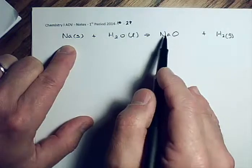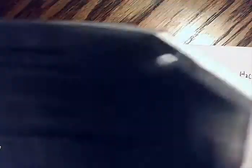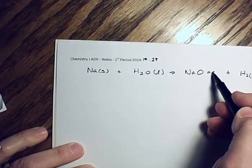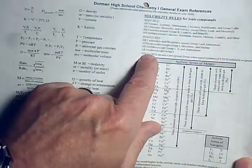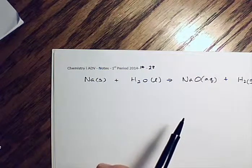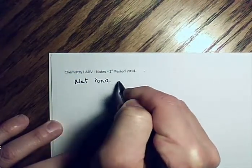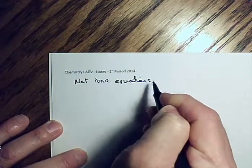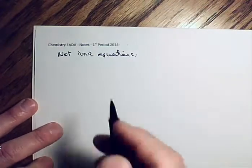Now let's talk about net ionic equations. Before you can write a net ionic equation, you have to write the complete ionic equation. There are only two kinds of reactions for which there are net ionic equations: single replacement and double replacement reactions. Only those two classifications produce net ionic equations.